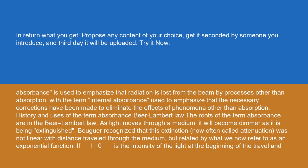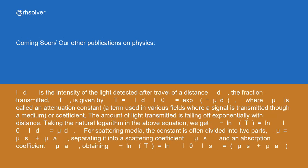If I₀ is the intensity of the light at the beginning of travel, and I_d is the intensity of the light detected after travel of a distance d, the fraction transmitted T is given by T = I_d / I₀ = exp(−μd), where μ is called an attenuation constant. The amount of light transmitted is falling off exponentially with distance. Taking the natural logarithm, we get −ln(T) = ln(I₀ / I_d) = μd.